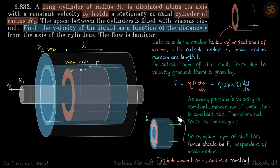Since every particle's velocity is constant, the momentum of the whole shell is constant, and therefore the net force on the shell is zero. On the top layer there is a force F towards the left. To counter that, there must be an equal force on the inside layer due to the velocity gradient just below it. Since net force is zero, the force on the inside layer should also be F.